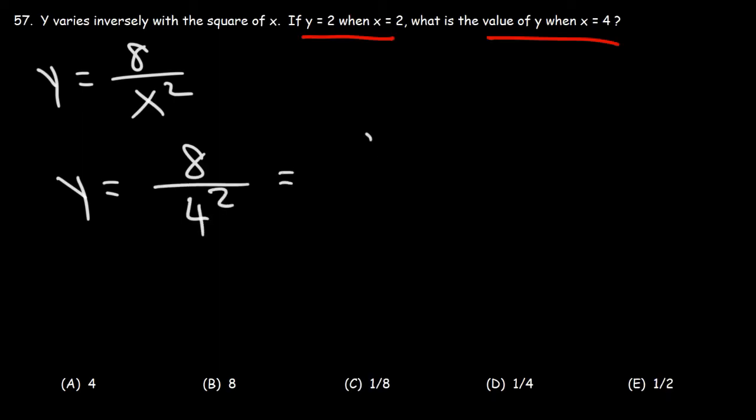Now 4 squared is 16. And we can write 16 as 8 times 2. And 8, you can write that as 8 times 1. So if you cancel an 8, we can clearly see that y is 1 half.